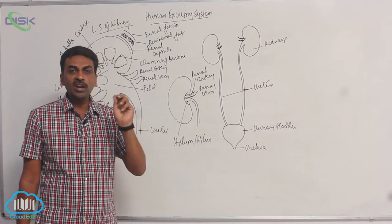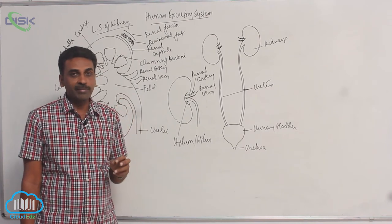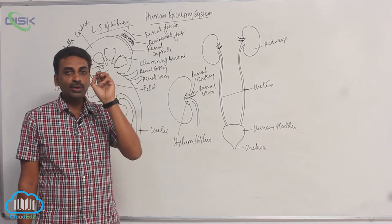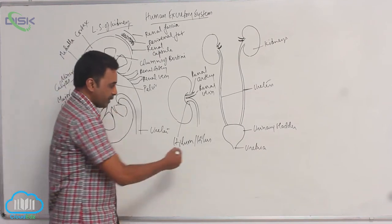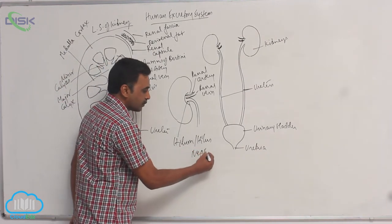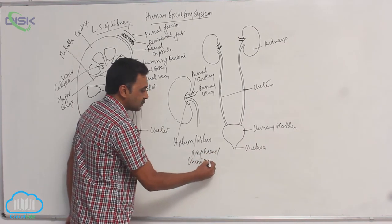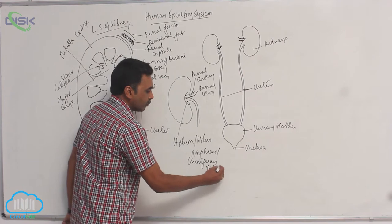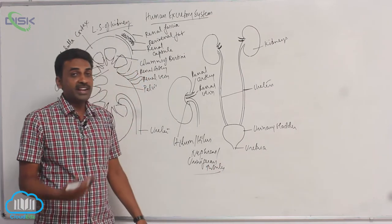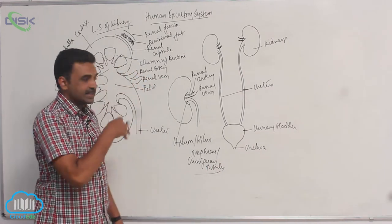Those minute units are called as nephrons. They are called nephrons, also called urinary ferrous tubules. There are a million nephrons inside the kidney.